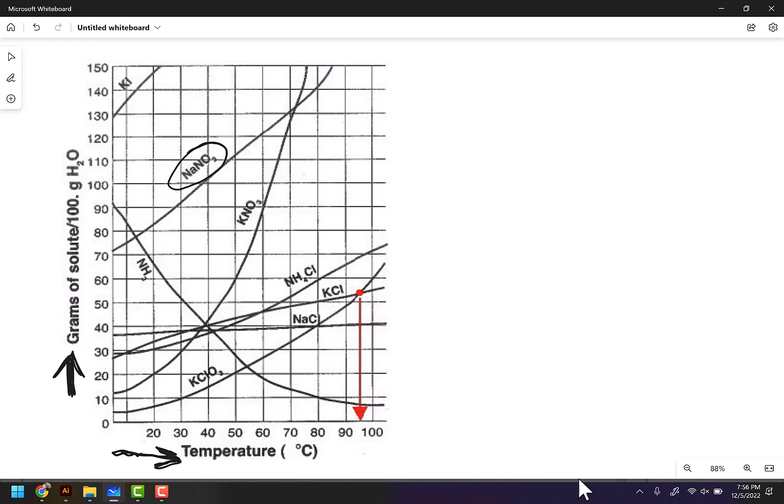For example, let's say I asked you how many grams of sodium nitrate will dissolve in 100 grams of water if the temperature is 40 degrees. Well, all I have to do is find 40 degrees on the x-axis and go straight up until I intersect with the sodium nitrate line, which is right there. It's right around 103, between 100 and 105 grams will dissolve in 100 grams of water.